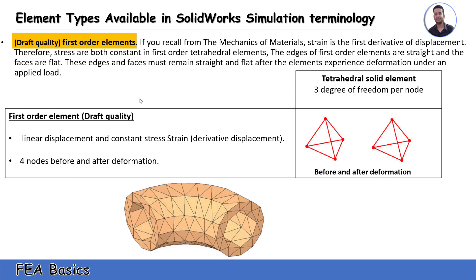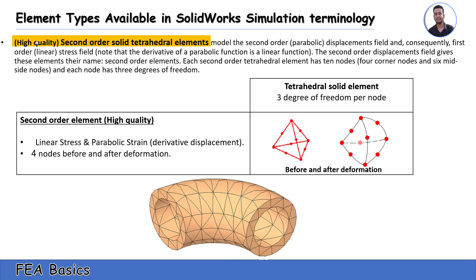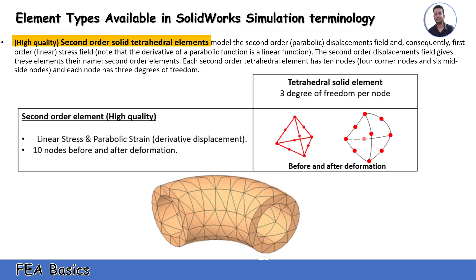In SOLIDWORKS we have two types of solid elements: draft quality and high quality, also called first order and second order elements. First order elements have a tetrahedral shape that does not change after deformation, with linear displacement and constant stress, and have four nodes. Second order, or high quality, solid tetrahedral elements change to a parabolic shape after deformation, with linear stress and parabolic strain, and have 10 nodes.